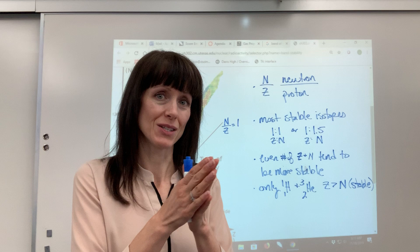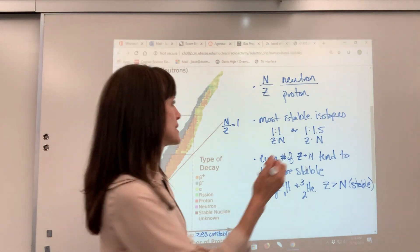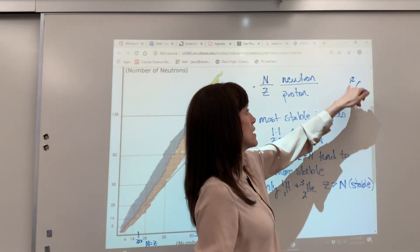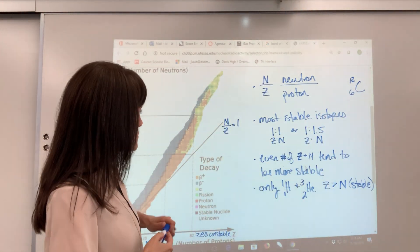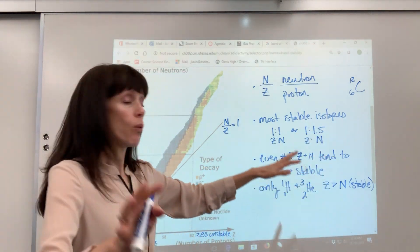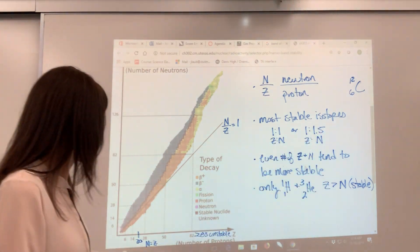So they have the same number of protons as they do neutrons. A great example of that would be a carbon-12. You've got 6 protons and 6 neutrons. Or a 1 to 1.5. Now, while I'm on that, let me show you.